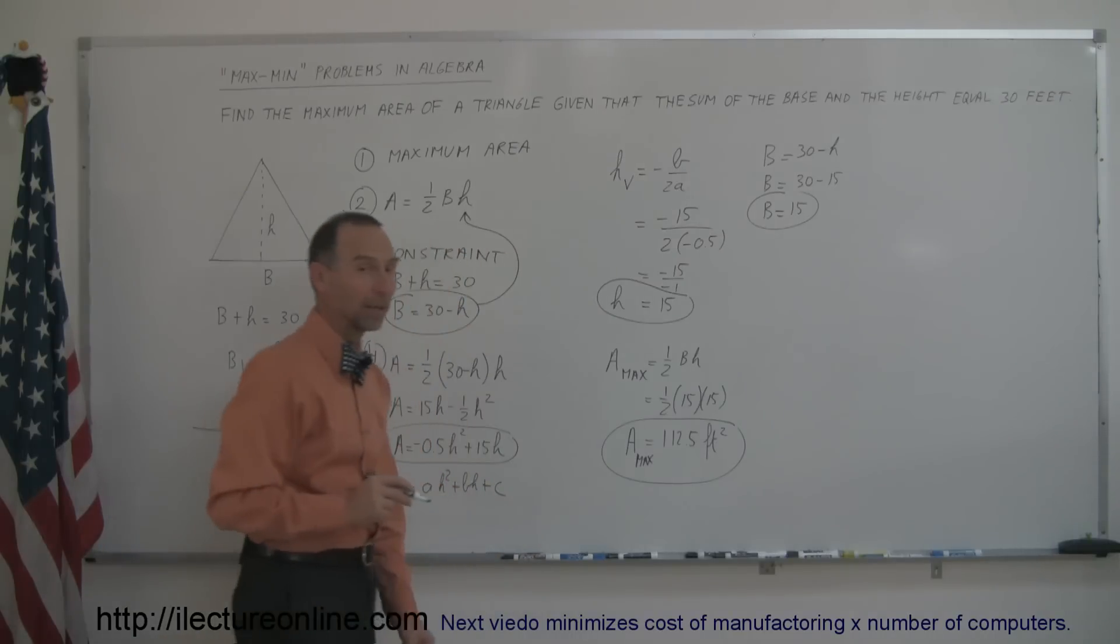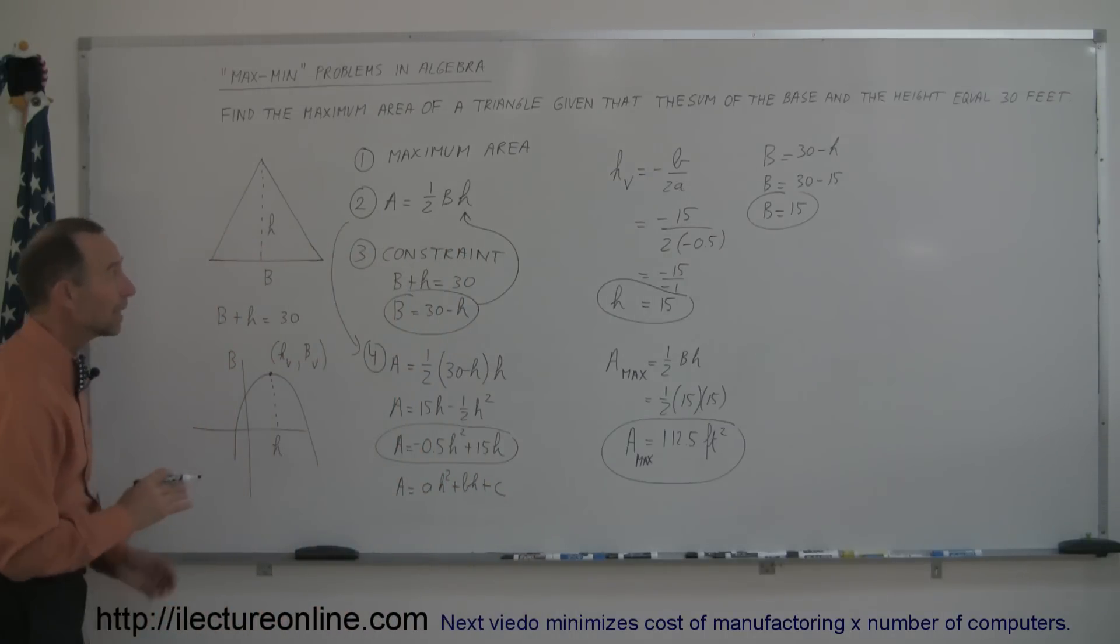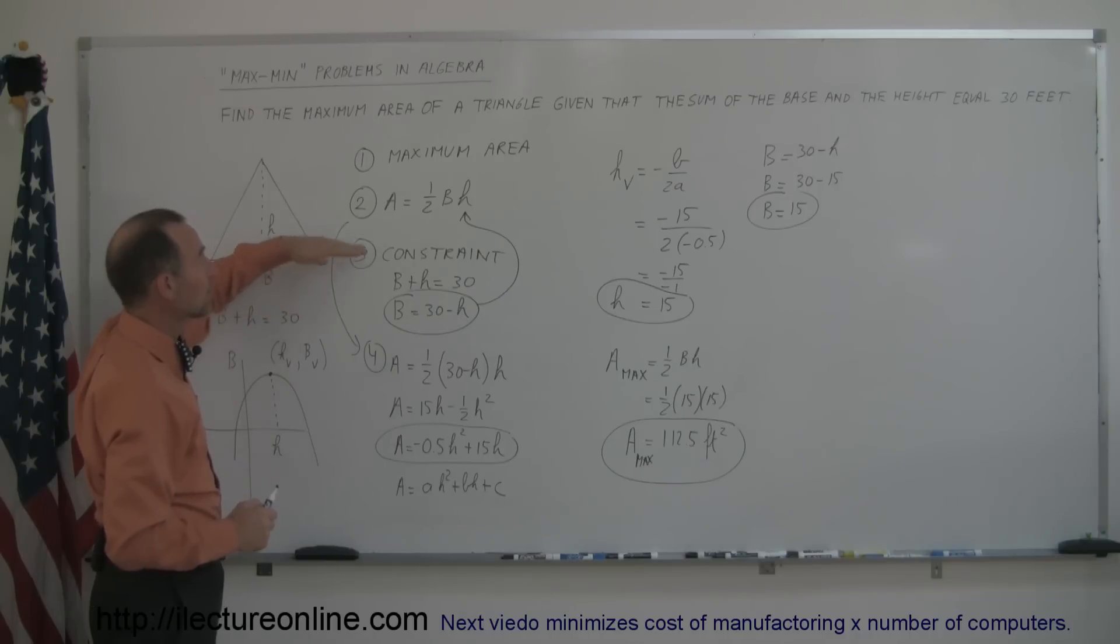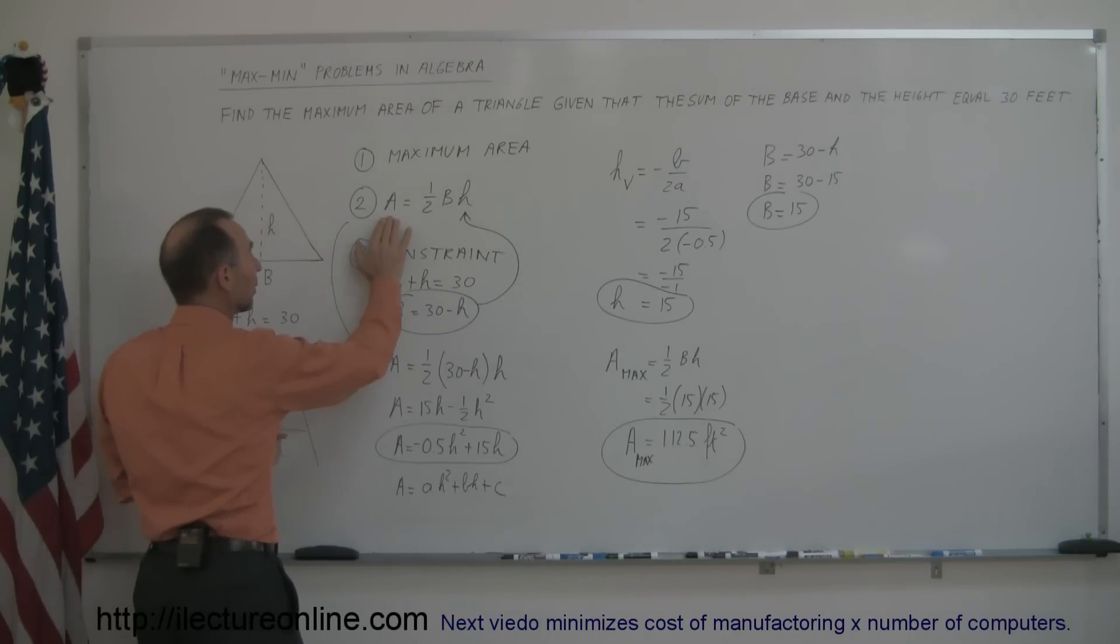And that's how you do a problem like that. So quickly recap what we just did. You were given a triangle, you were given that the sum of the base plus the height equals 30 feet. You first determine what you're trying to maximize. You then find an equation defining the variable that you're trying to maximize, so you're trying to maximize the area, and the area of the triangle is one half the base times the height.